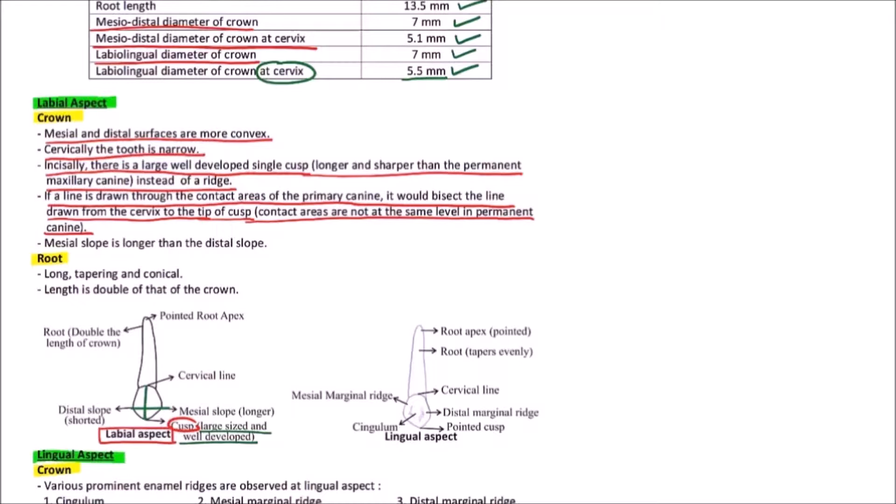The mesial slope is longer than the distal slope. We can observe that this is the mesial slope. This is the distal slope. So, distal slope is shorter while the mesial slope is relatively longer.